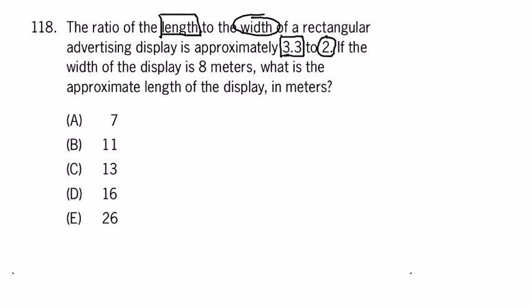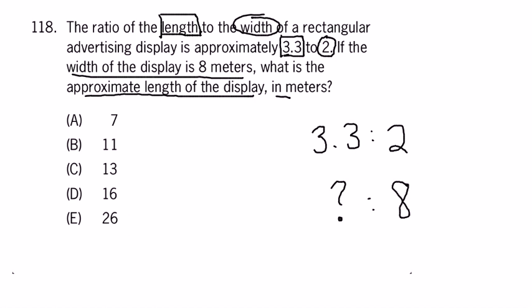Going straight to the end, which is a technique I recommend with a lot of math word problems, they're asking us for the length of the display. So 3.3 to 2 and question mark to something. Let's read the rest of the problem. The width of the display is 8 meters, so 8 is right there. Now how can we go about doing this?